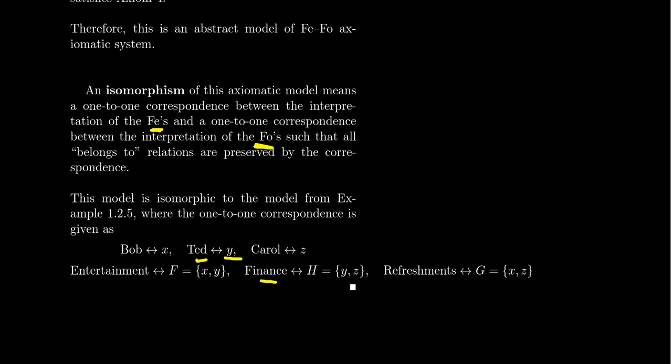All of the relationships between the fees and the foes were satisfied by both of the two models. These two models are isomorphic because we had this correspondence between all of the objects in play. The fees go to the fees and the foes go to the foes, and the belonging relation is preserved.